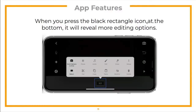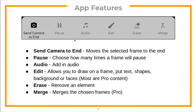When you press the black rectangle icon at the bottom, it reveals more editing options. 'Send to end' moves the selected frame to the end. 'Pause' chooses how many times a frame will pause. 'Audio' adds audio from your gallery or microphone. 'Edit' allows you to draw on a frame, add text, shapes, backgrounds, or faces — though most of these are pro-only options. 'Erase' removes an element. 'Merge' merges chosen frames and is a pro option.